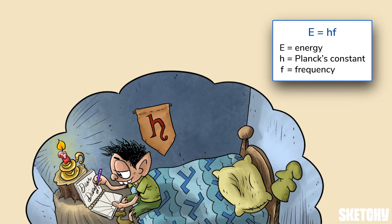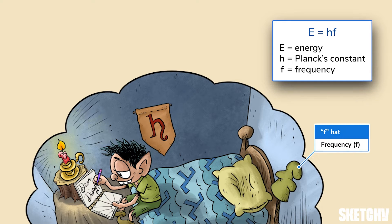The energy of a photon is directly proportional to its frequency, which is a measurement of how many oscillations the electromagnetic wave of the photon makes each second. To remind you of this frequency, Herbert's hat is shaped like an F.